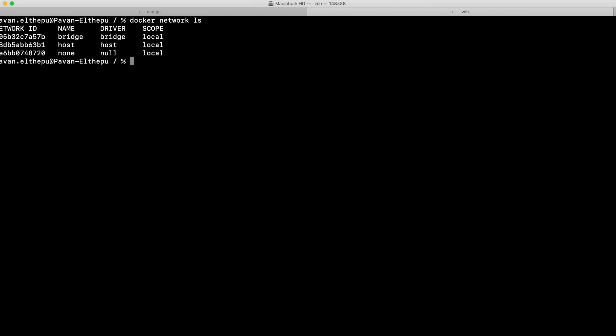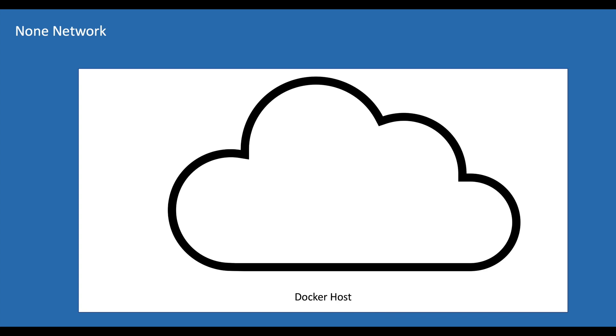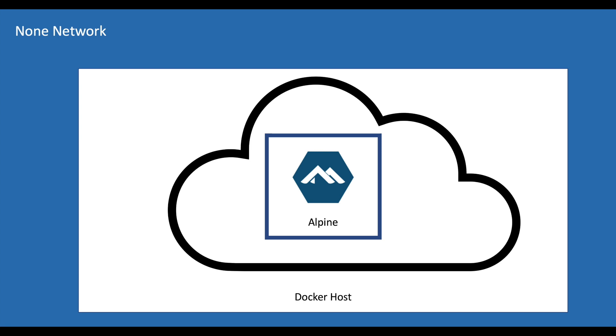You can see three different networks available. These are the three default networks created when you installed Docker: bridge, host, and none. Let's start with the none network. If you have a container in the none network, you will not be able to access anything outside that container except its own resources. Let's see that in action by running an Alpine image in this none network.